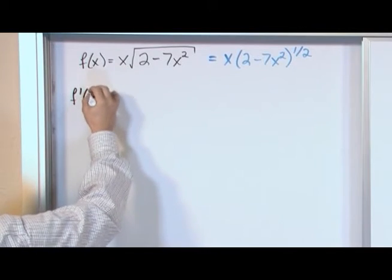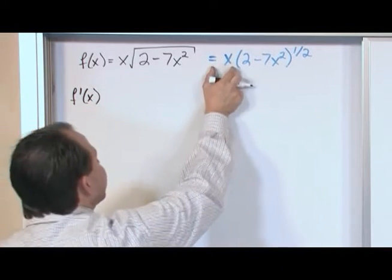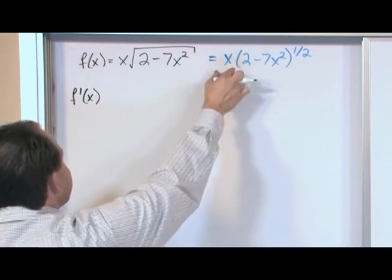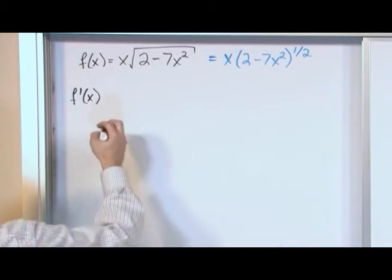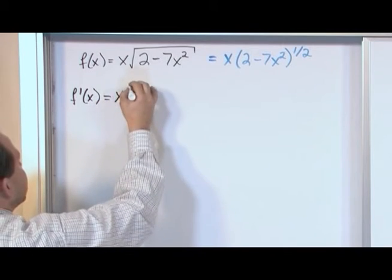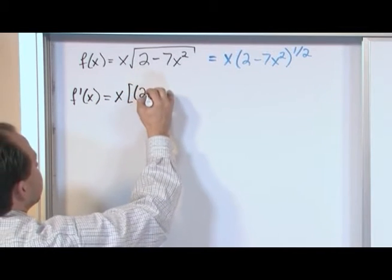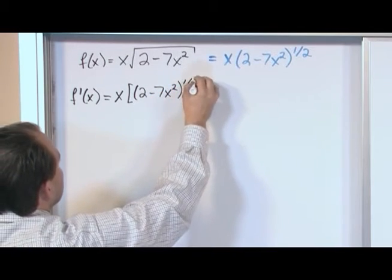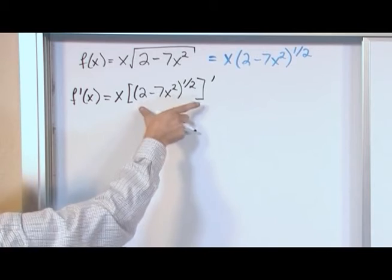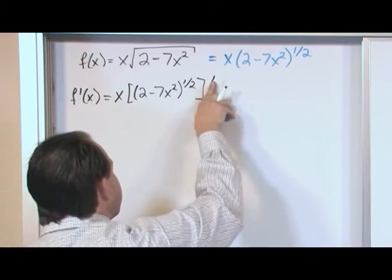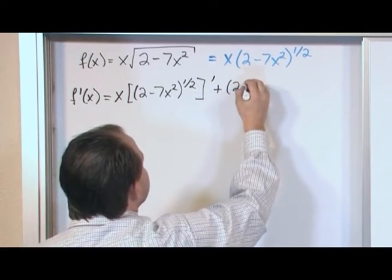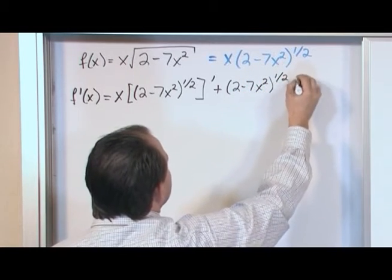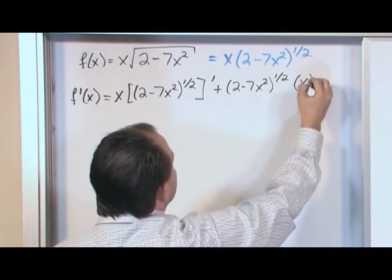We're going to use the product rule as the outermost thing because that's really what's going on here. What's the product rule? It's the first function times the derivative of the second function plus the second function times the derivative of the first function. So it's x times the derivative of (2 minus 7x squared) to the one-half power plus (2 minus 7x squared) to the one-half times the derivative of x.